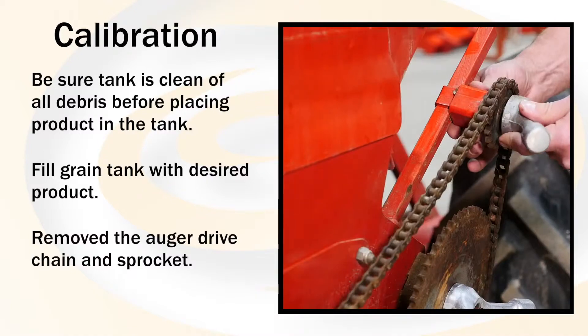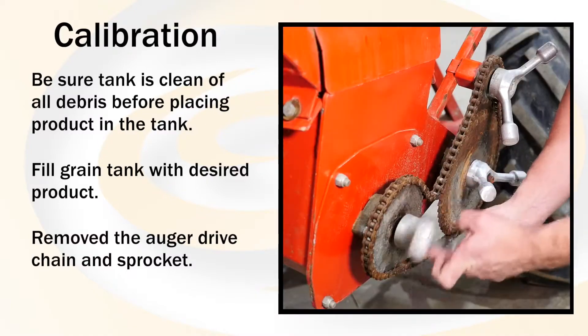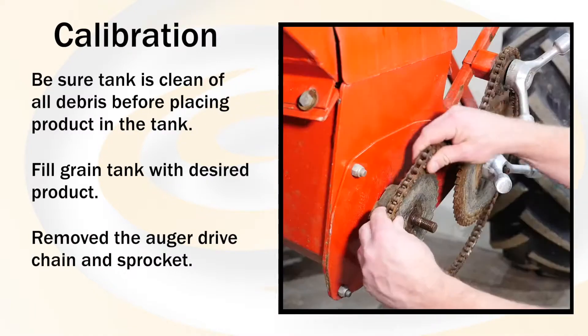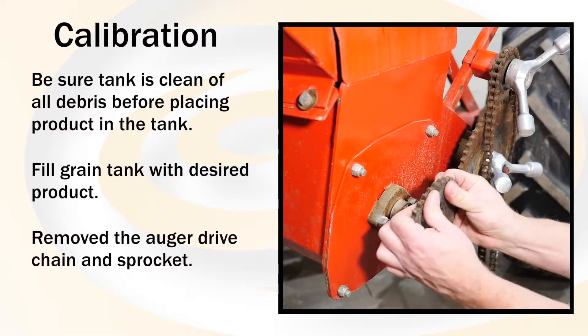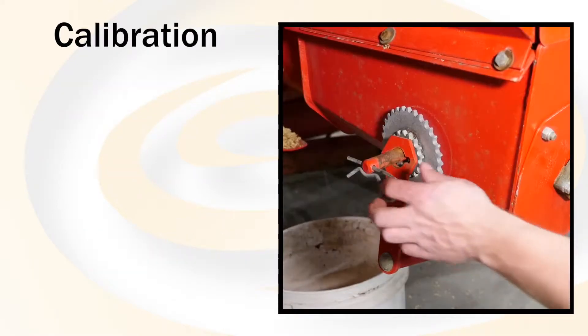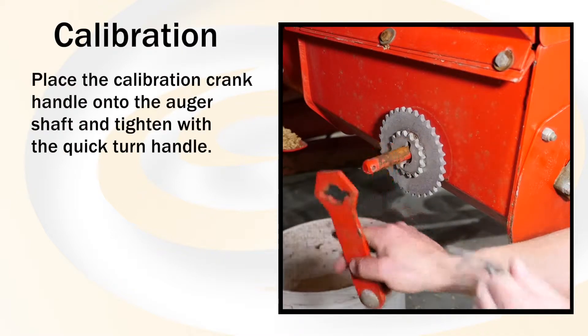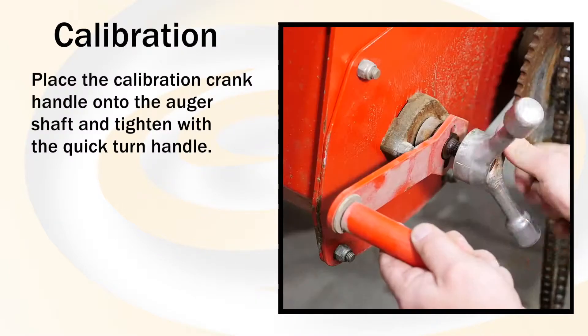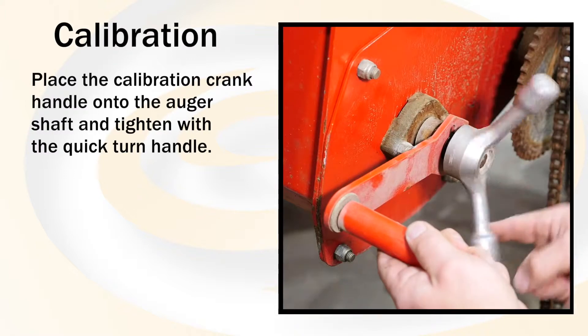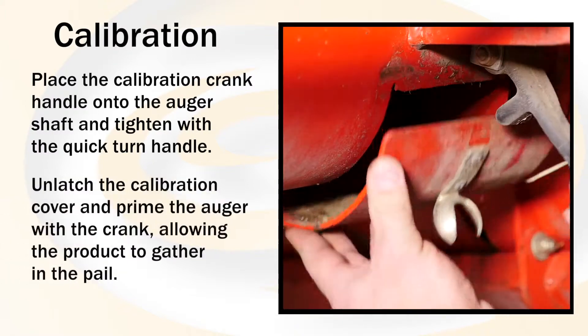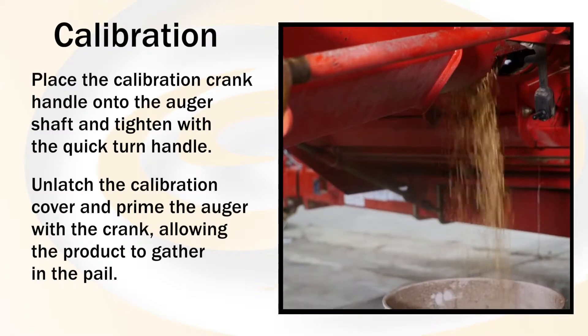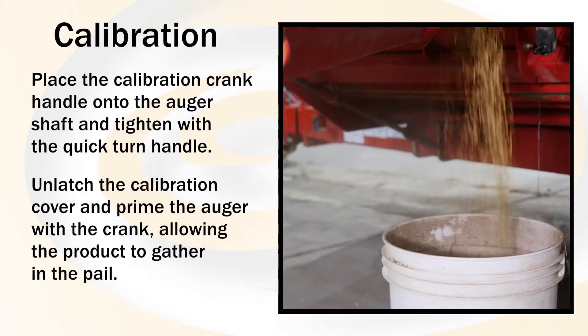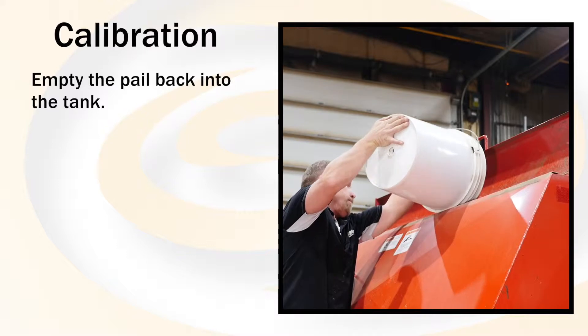Remove the auger drive chain and sprocket. Place the calibration crank handle onto the auger shaft and tighten with a quick turn handle. Unlatch the calibration cover and prime the auger with the crank, allowing the product to gather in the pail. Empty the pail back into the tank.